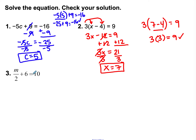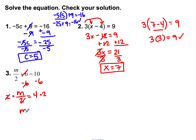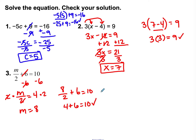Number 3: m divided by 2 plus 6 equals 10. I've got division and addition; I get rid of the addition first by subtracting 6 from both sides. 6 minus 6 is 0, leaving m divided by 2. 10 minus 6 equals 4. I cancel the division with multiplication, multiplying by 2 on both sides. 4 times 2 is 8, so m equals 8. Check: 8 divided by 2 plus 6 equals 10. 8 divided by 2 is 4, plus 6 equals 10 — checked and correct.